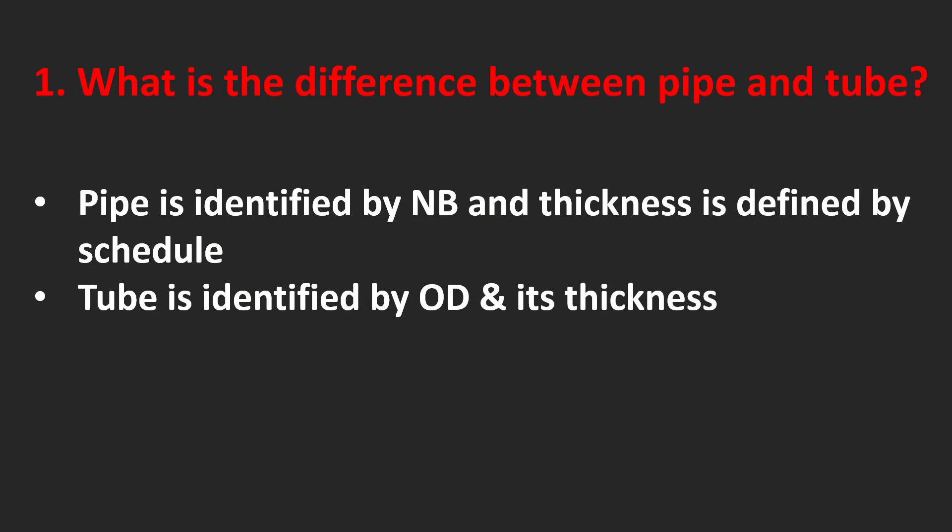What is the difference between pipe and tube? Pipe is identified by nominal bore and its thickness is defined by schedule. Tube is identified by OD and its thickness.